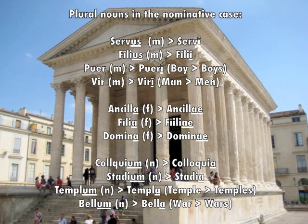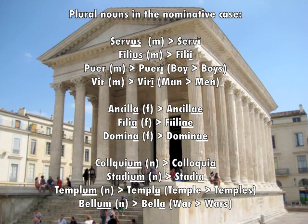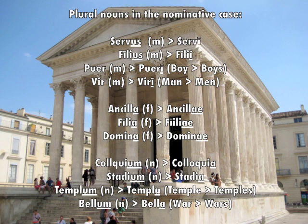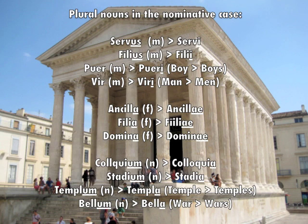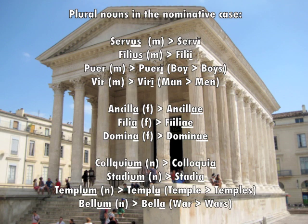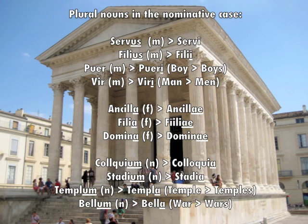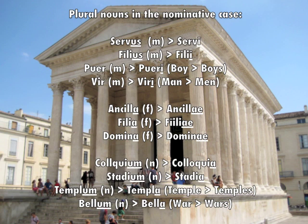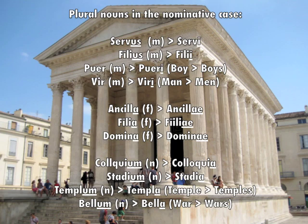Filius becomes filii. Masculine nouns ending in -r will add a long -i to the end of the word. For feminine nouns we add an -e to the -a, creating the diphthong -ae, so ancilla becomes ancillae, filia becomes filiae, domina becomes dominae. For neuter nouns we simply drop the -um and add an -a.